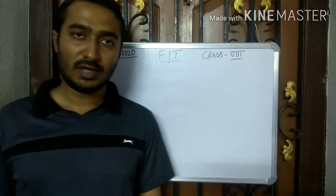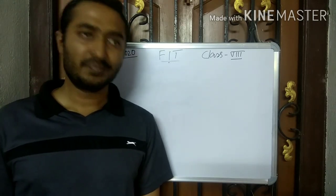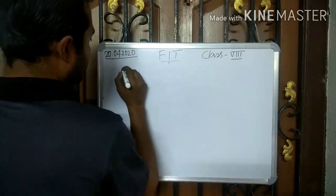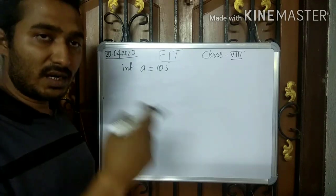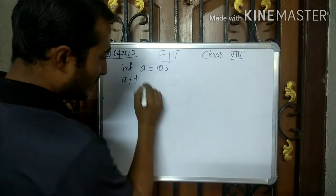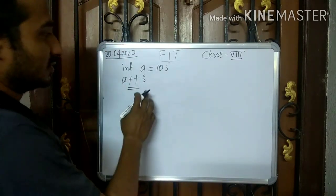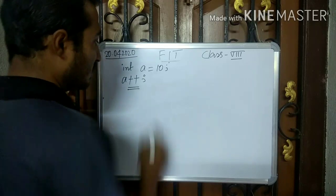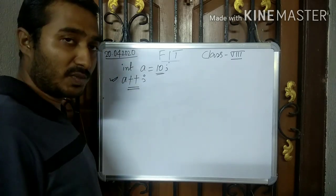Now we are going to discuss about the unary increment and unary decrement operator. The method of using both operators is the same, but the purpose of use is a bit different. Let's declare a variable — suppose int a equals to 10. Now we are incrementing the value of a, that is a equals a++. The unary increment operator increases the value of the variable or operand by one only. So the value of a is 10, and after this statement the value of a should be 11.